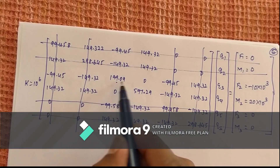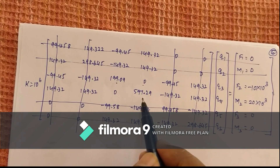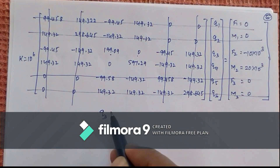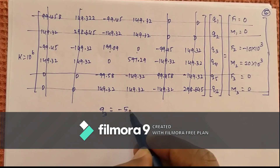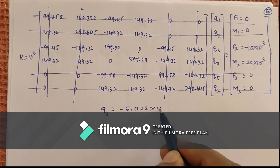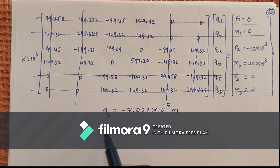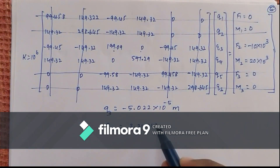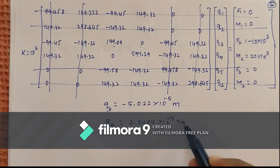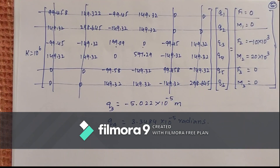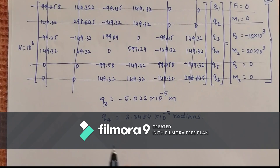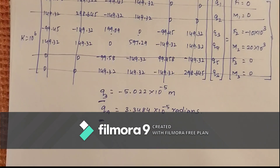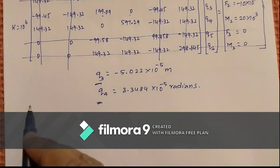Solving, we get q3 equals minus 5.022 into 10 power minus 5 meters and q4 equals 3.3484 into 10 power minus 5 radians. These are the unknown displacements at node 2. We also need to find the internal loads.